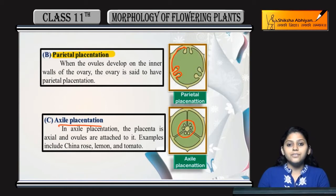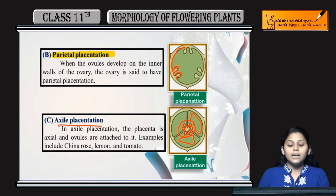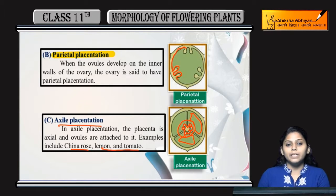Next is axial placentation. In this, ovules are present at the central axis and septa are present. These are the septa and these are the ovules present at the central axis. It is found in china rose, lemon, and tomato — citrus fruits have this type of placentation.